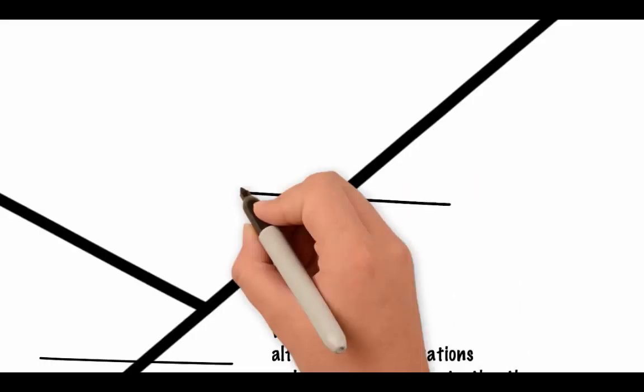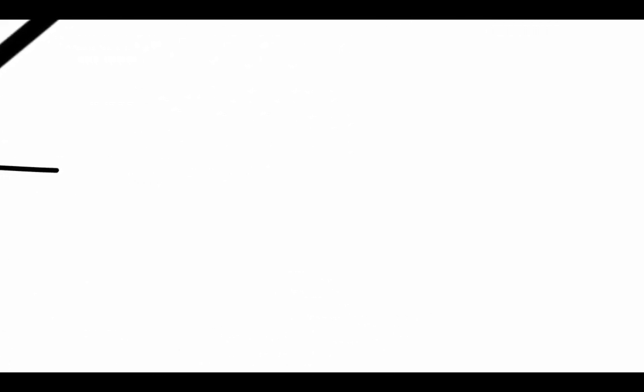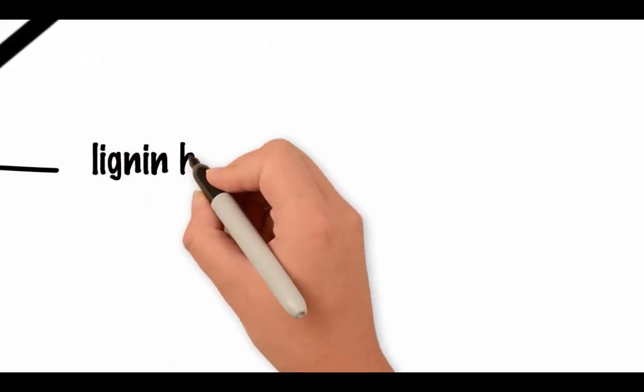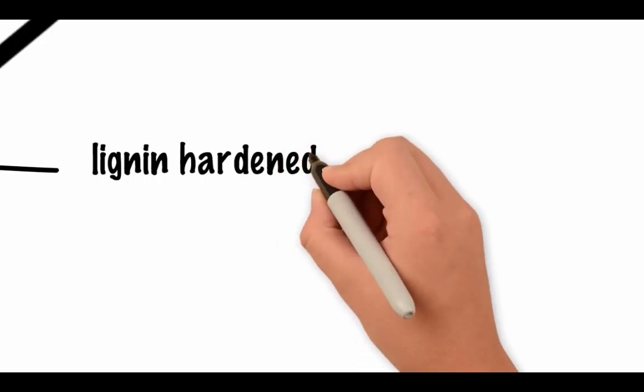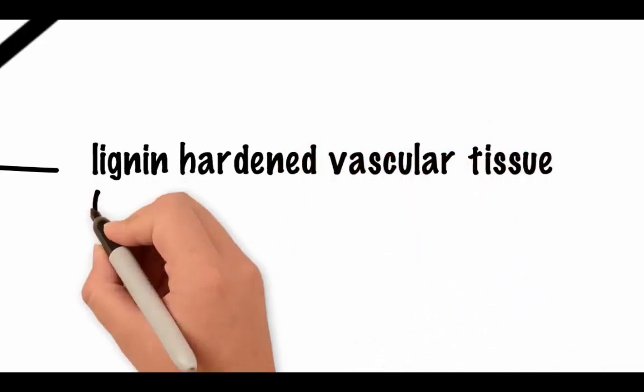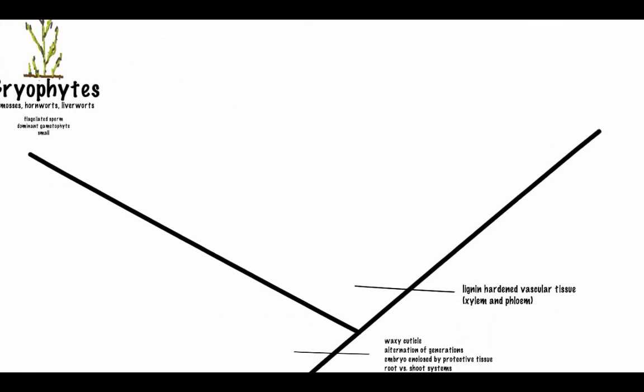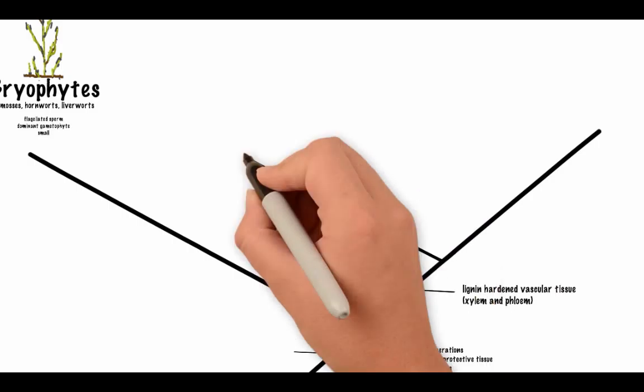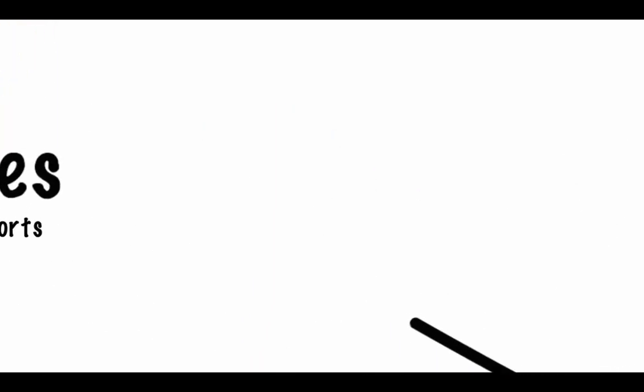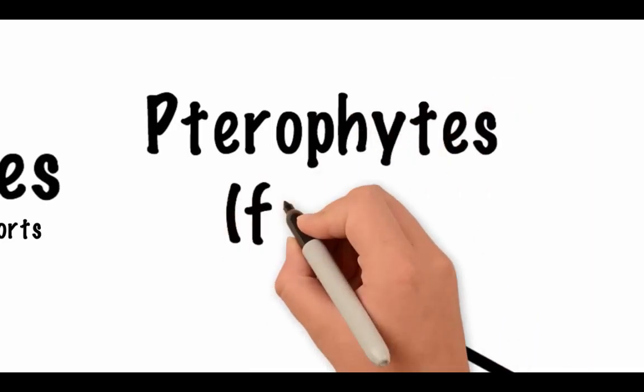The second major event in plant evolution was marked by the development of plants with lignin-hardened vascular tissues that transport water and nutrients. Like the bryophytes, these plants have flagellated sperm and no seeds. The presence of xylem and phloem allowed plants to more efficiently transport materials from one region of the plant to the next, as well as provided structural support for a larger plant.